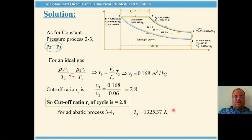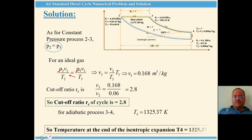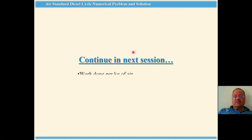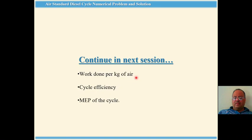Thank you, this is all for this session. We have calculated the three major values: the cutoff ratio of 2.8, the maximum temperature T3 of 2591 kelvin, and the temperature after isentropic expansion T4. We will continue in the next session to calculate work done per kg of air, cycle efficiency, and mean effective pressure.